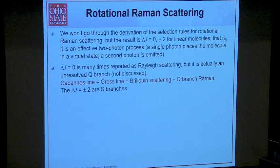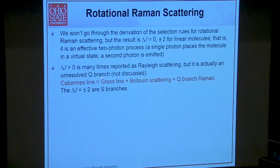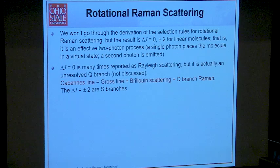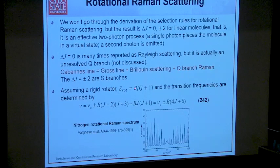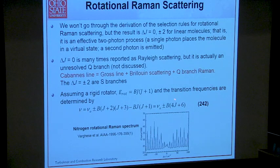For detailed reading on these aspects, see Dick Miles' 2001 MST paper. The Cabannes line can now be written as the gross line plus Brillouin scattering plus Q-branch Raman. Assuming a rigid rotator from our basic spectroscopy in Lecture 8, you already have all the skills to compute where all the rotational Raman frequencies are using the selection rules of ΔJ = ±2.